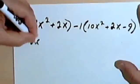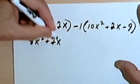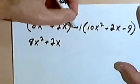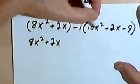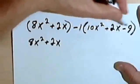So rewriting the whole thing, we're going to have 8x² + 2x. And then I'm going to distribute this -1 to these three terms.